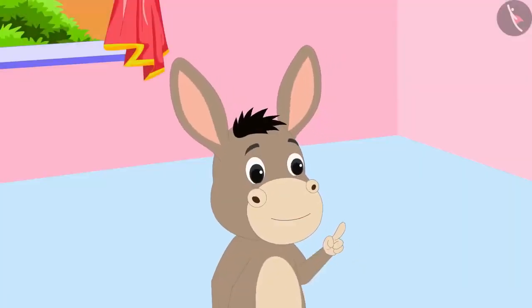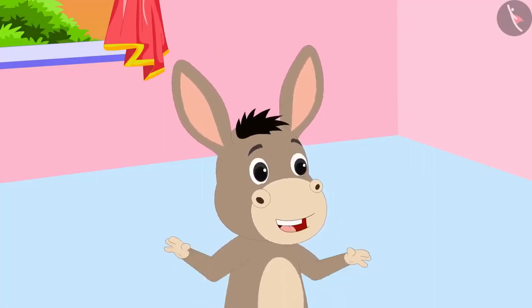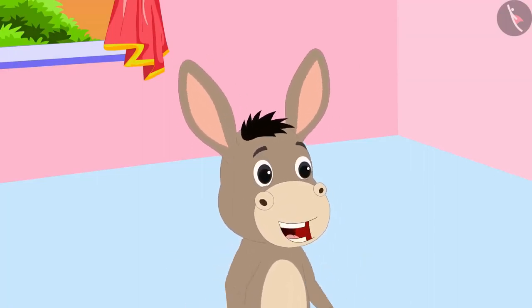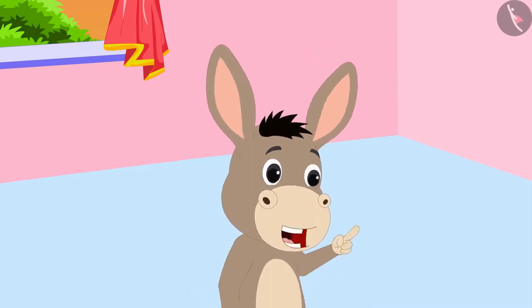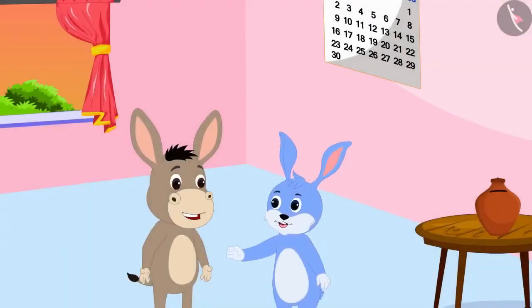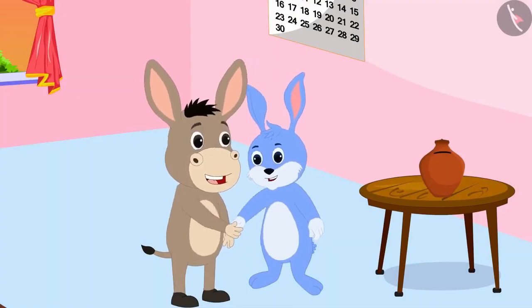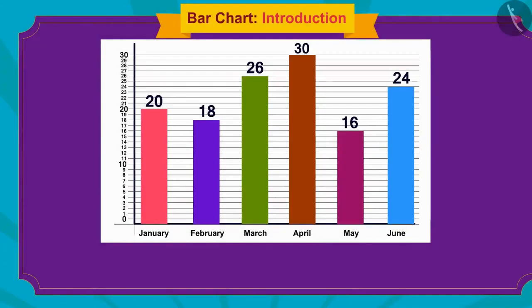Well done, Bunny, you learned very quickly. Now, just like this, you continue saving money so that by the end of the year you can accumulate a lot of money. Bunny promised Bola that he would continue to save money. In this video, we learned about bar charts. In the next video, we will learn more about it through some interesting examples.